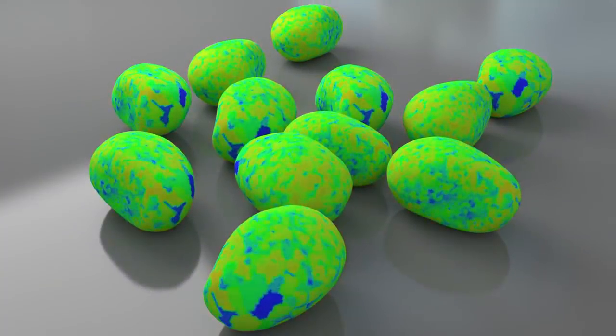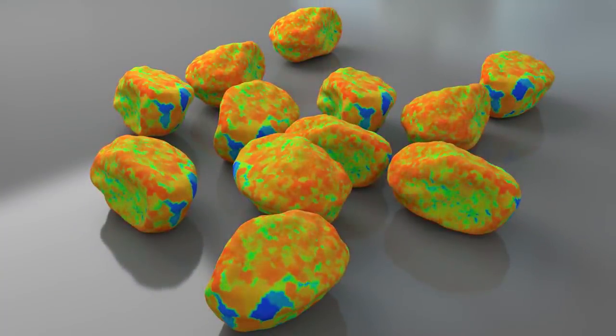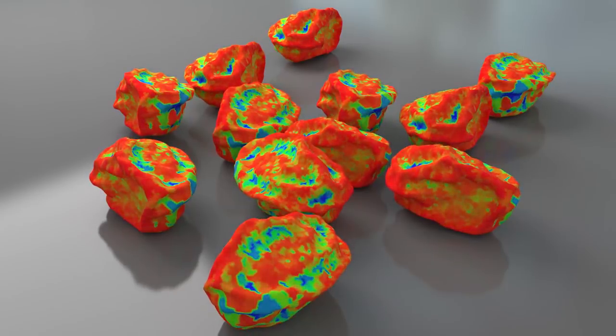We visualize the saturation evolution of the grapes. The color changes from blue to green then to red with decreasing saturation level.